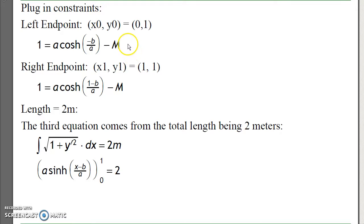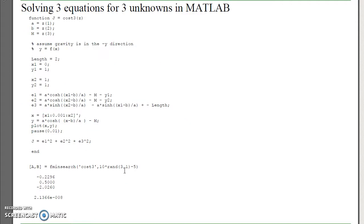Plugging in the endpoint constraints, at the left endpoint I'm at 0, 1. When x is 1, y is 1, and the length is 2 meters, meaning this has to be satisfied. Throw that in MATLAB, meaning I'm going to guess a, b, and m, calculate the three equations, they should all equal 0, if they're not 0, the equations don't balance. Return the sum squared error, and let MATLAB find a, b, and m to minimize that. And with fminsearch, it'll find the answer.